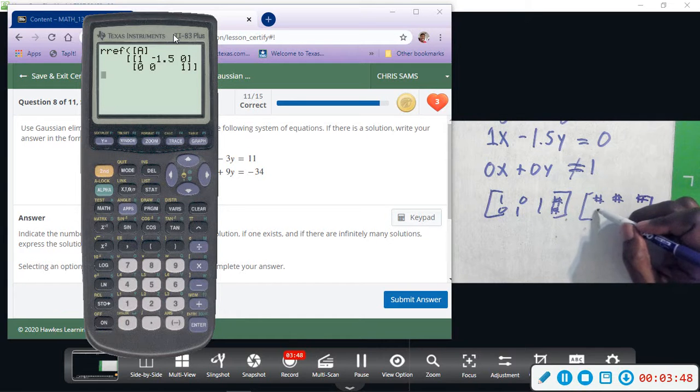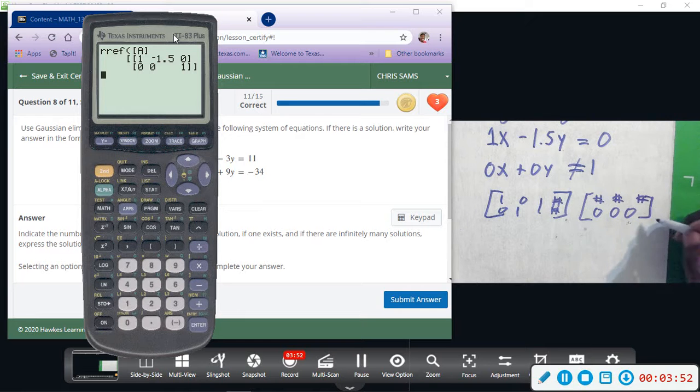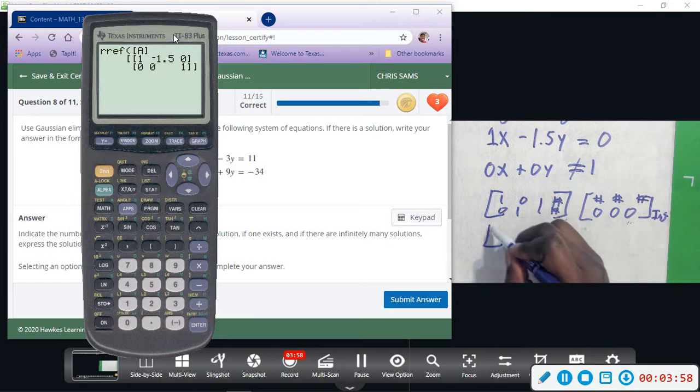You'll have a case where you might have some numbers and then you'll have all zeros. If you have all zeros, that means it's true, so you have infinite solutions.